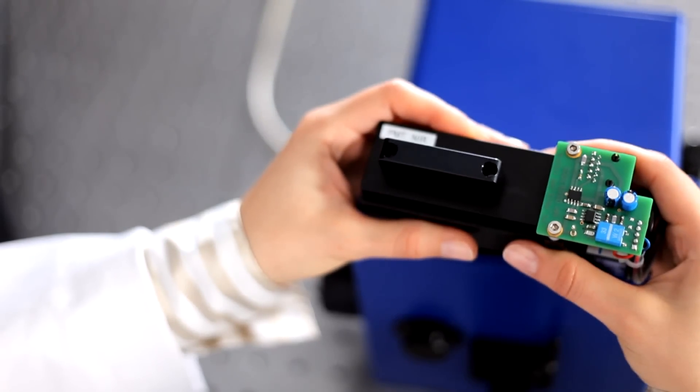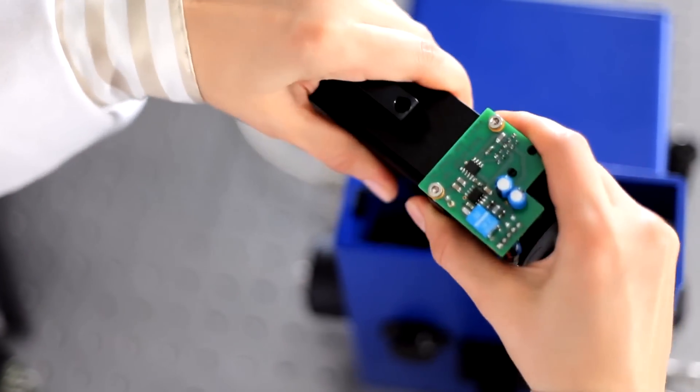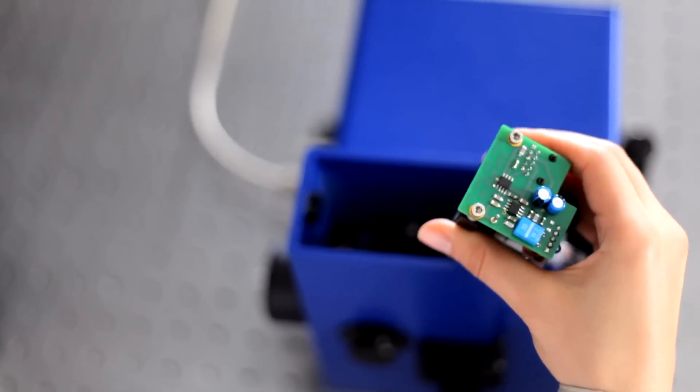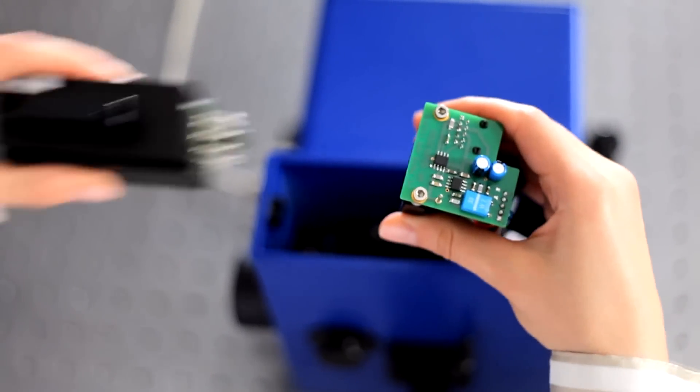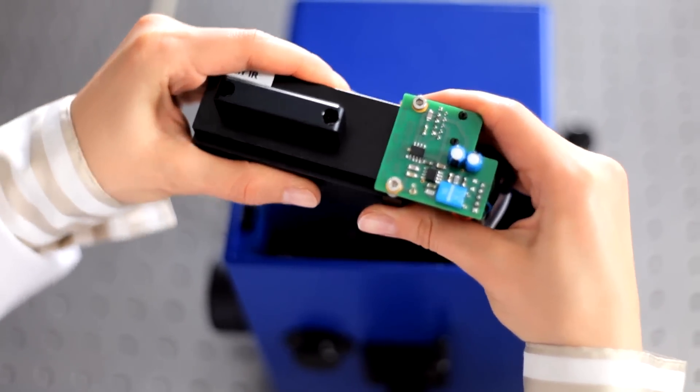To move the photomultiplier tube to a new detector unit, simply unplug the tube, like this. Then line up the pins with the unit you want to install, and snap them together.